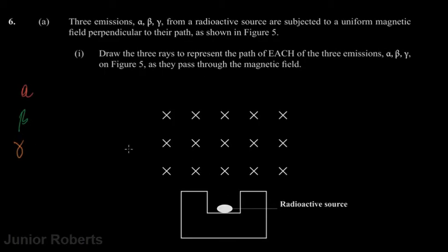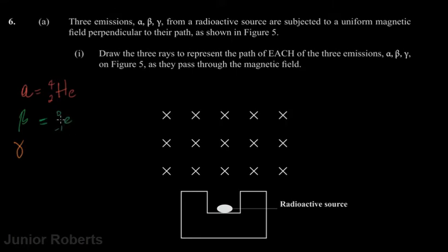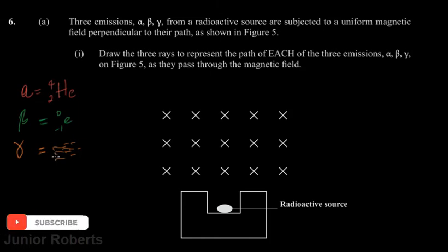Alpha radiation results in the release of a helium nucleus. A beta emission results in the emission of a high-speed electron. And gamma radiation is essentially the emission of high-energy radiation. So those are all three radioactive emissions. Now we're going to look at how these three different radioactive emissions are affected by a magnetic field.